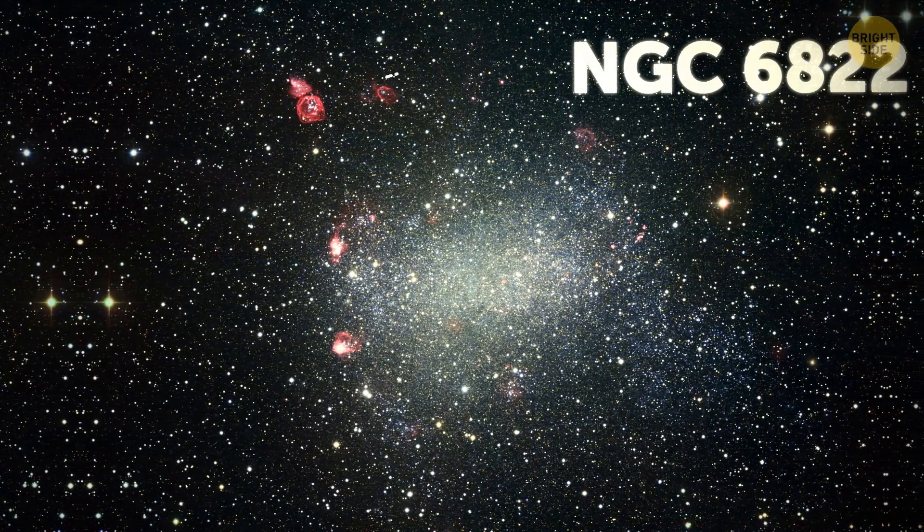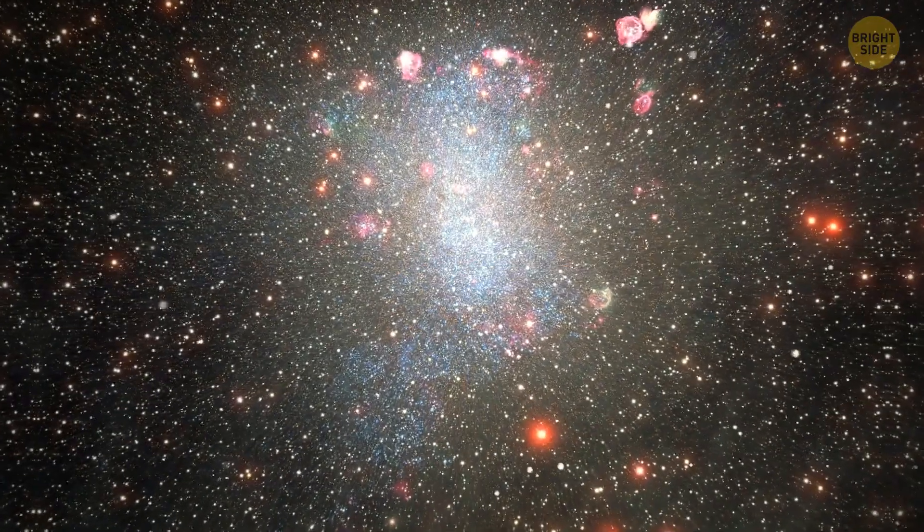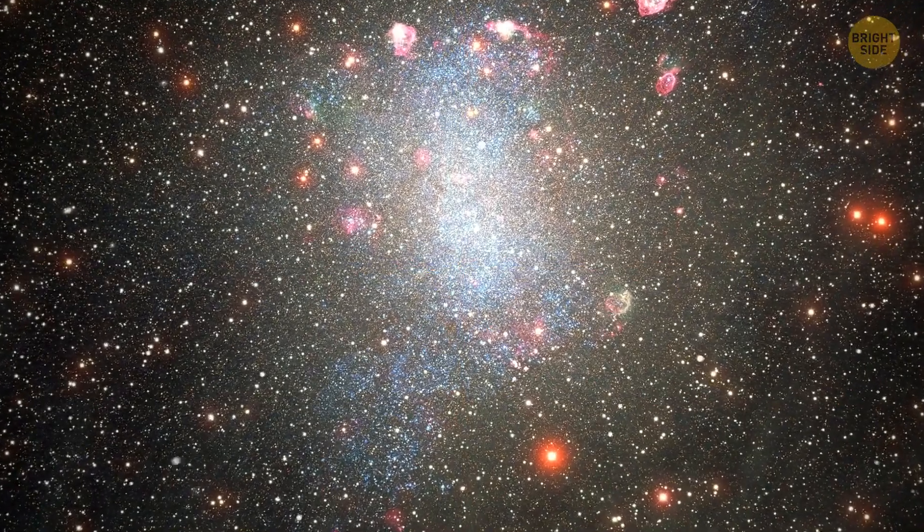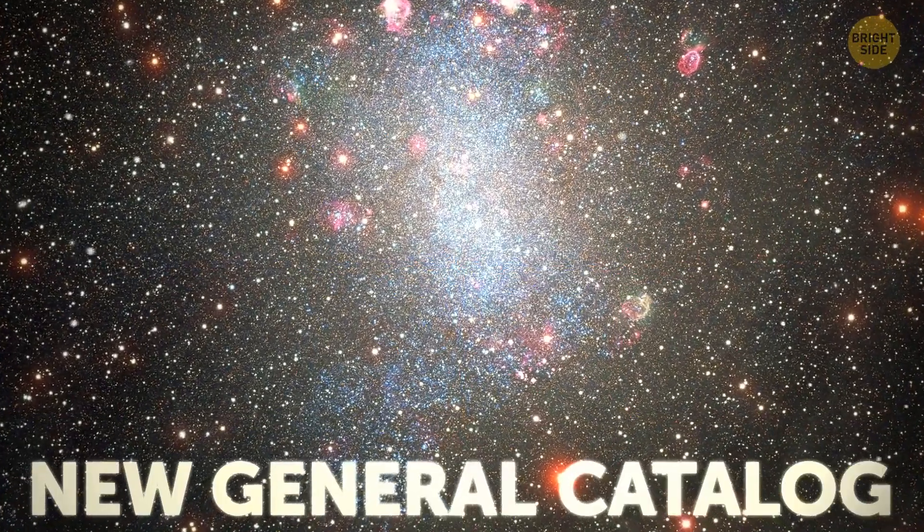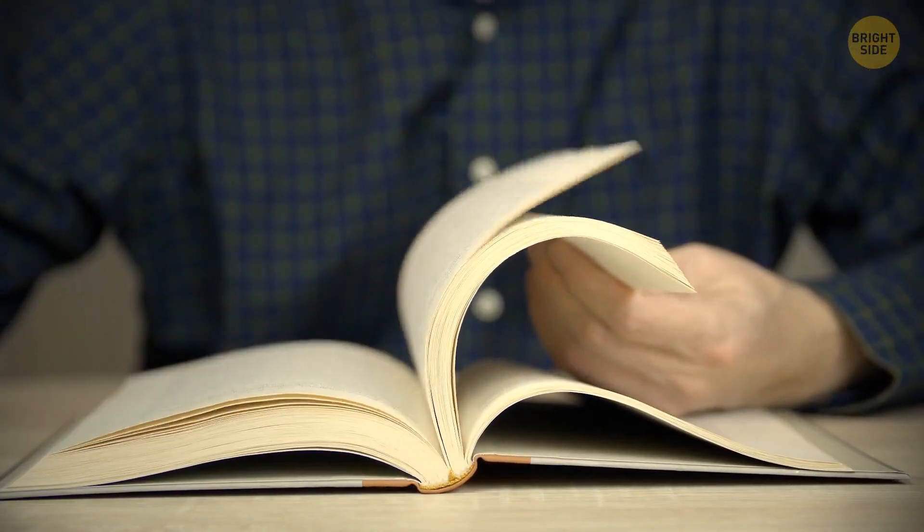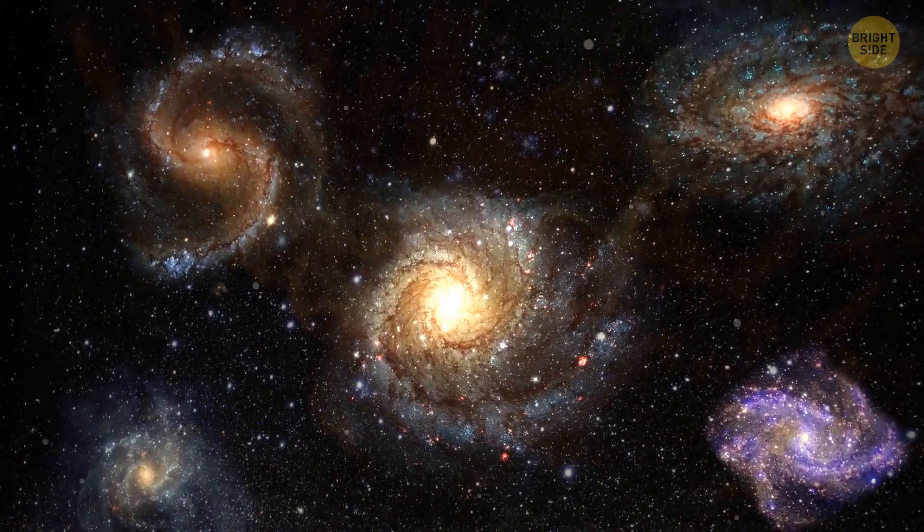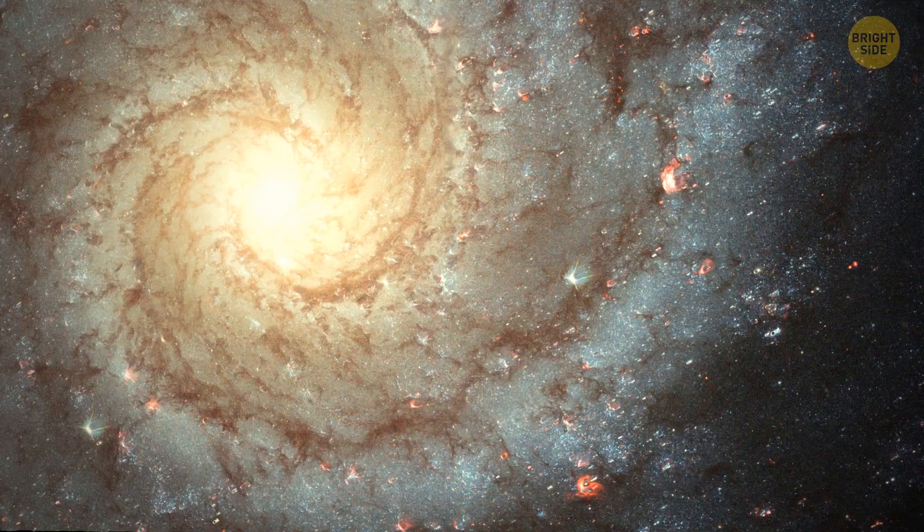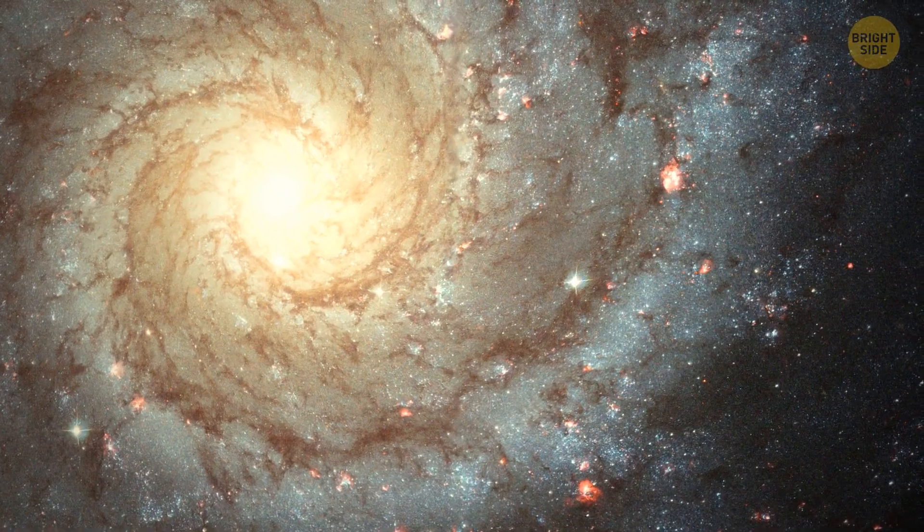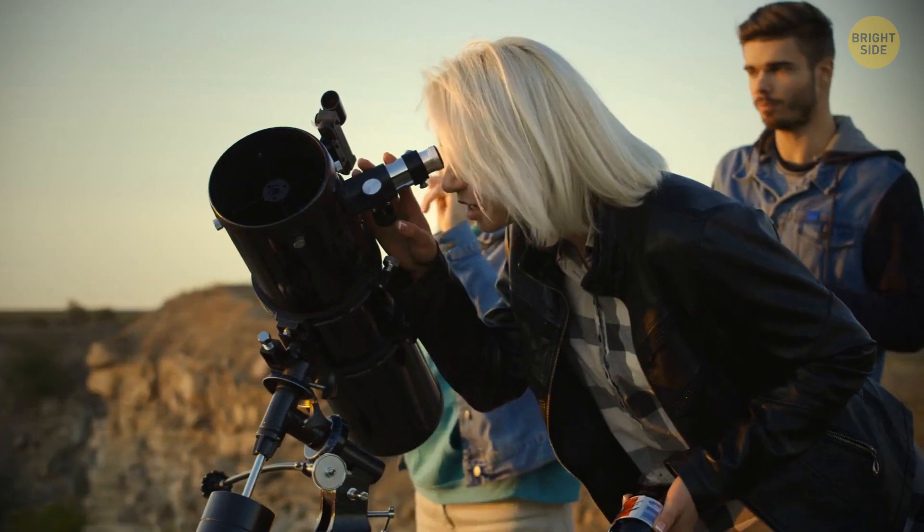You will notice NGC 6822, an irregular dwarf galaxy off to the starboard. NGC stands for New General Catalog of Astronomical Objects. Now, you'd think there'd have been an old general catalog, but there wasn't. It was just a new catalog. There is, however, a revised New General Catalog, which astronomers refer to regularly. Clears that up, huh?